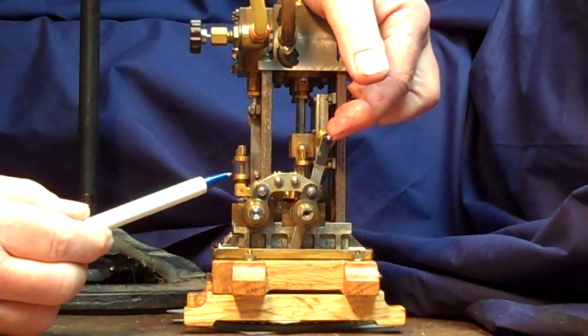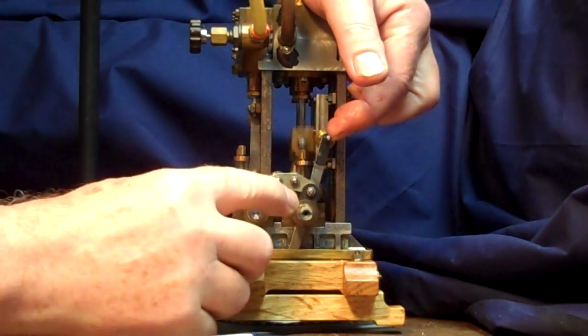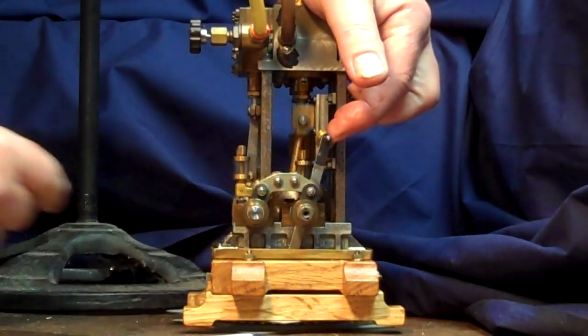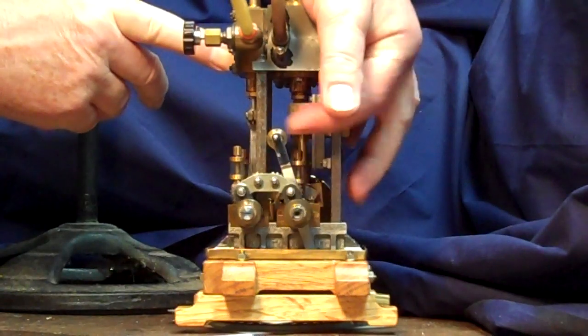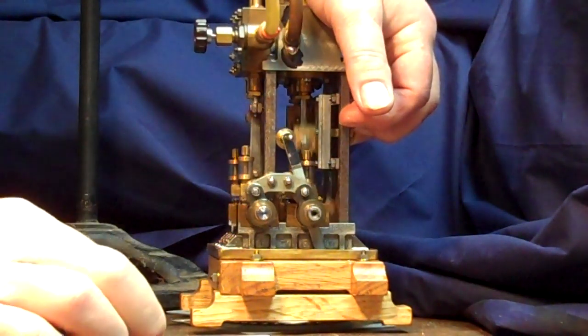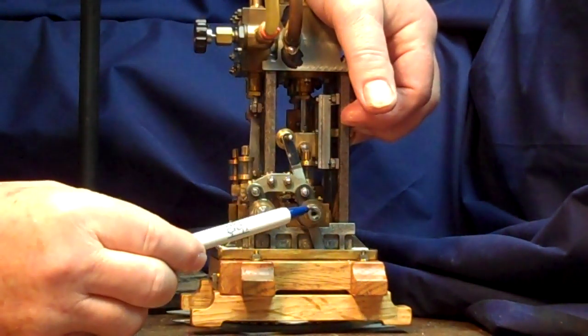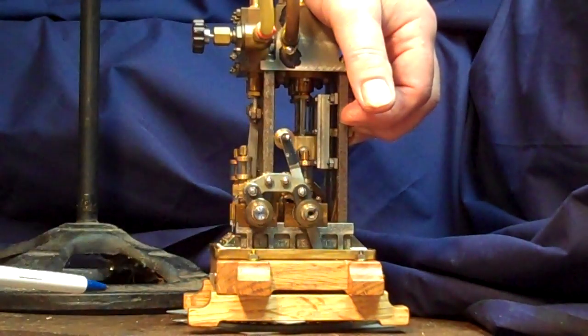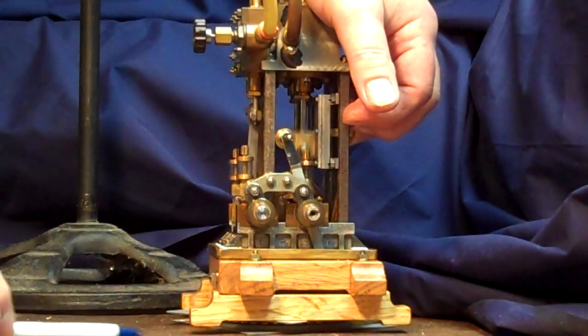Watch these two shafts. This shaft now is running clockwise. The crankshaft is running clockwise. The eccentric shaft is running counterclockwise. Now, let's see what happens when I throw this. Now you see that the crankshaft is running counterclockwise and the eccentric shaft is running clockwise. That's the beauty of this.